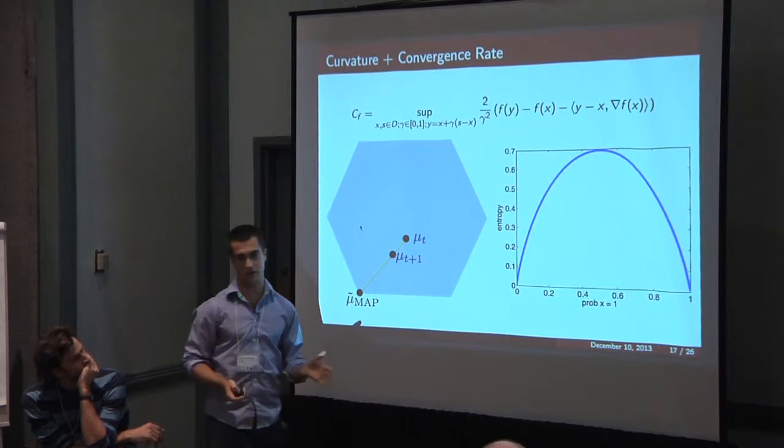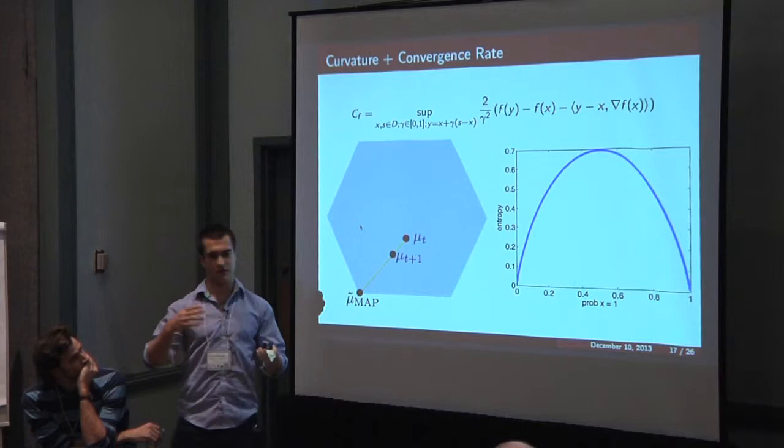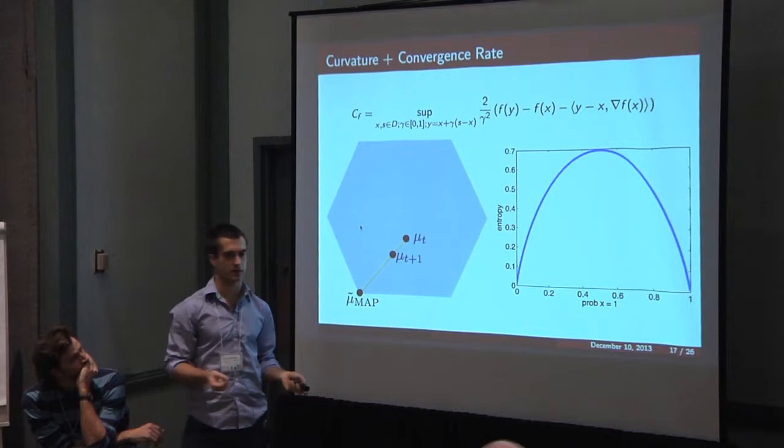This is just a 1D entropy. The 1D entropy gradient gets really steep at the boundaries. So this means your curvature is unbounded and close to the boundaries. What that means is that the convergence rate of the algorithm using this analysis is just not even well-posed.